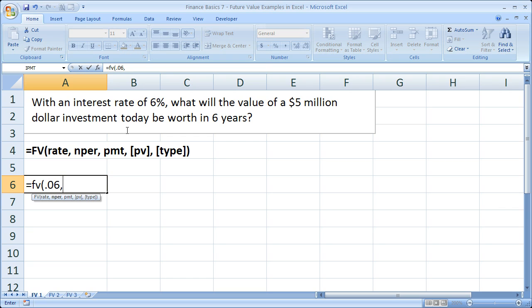Now, the number of periods. Well, we want to figure out what it's going to be worth in six years. So our periods are going to be within years. We're going to keep it simple for that for now. So years, number of periods, 6. Comma.